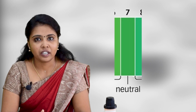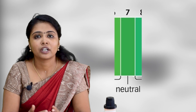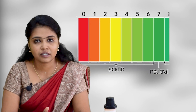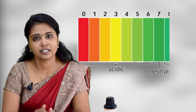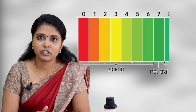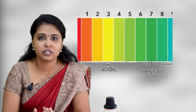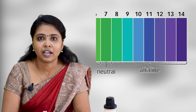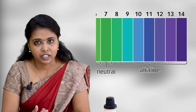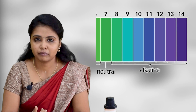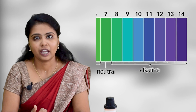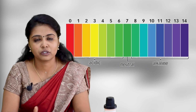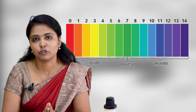If an acidic medium is said to be like that, it must be having a pH less than 7. If the pH is less than 7, it is known as an acidic medium. And if the pH is above 7, it is known as an alkaline medium. By this way, we classify solutions into acidic, basic, or neutral.